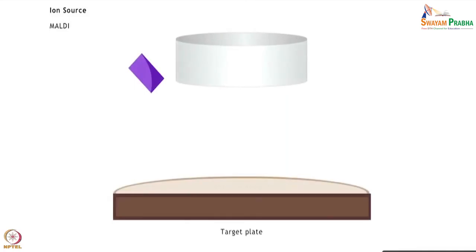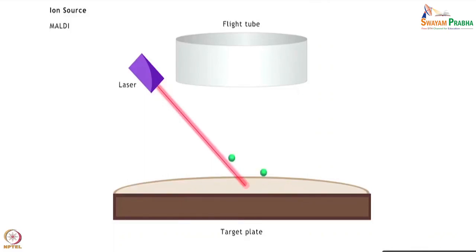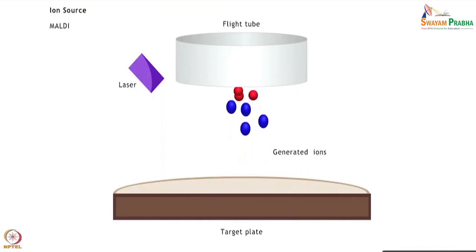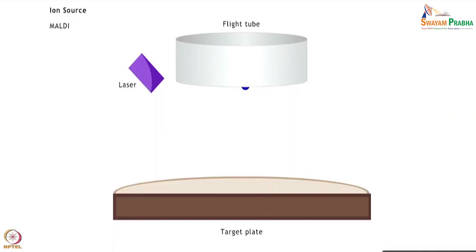The ionization source is responsible for converting analyte molecules into gas-phase ions in vacuum. This has been made possible by the development of soft ionization techniques like matrix-assisted laser desorption ionization and electrospray ionization, which ensure that the non-volatile protein sample is ionized without completely fragmenting it. In MALDI, the analyte of interest is mixed with an aromatic matrix and bombarded with short pulses of laser. The laser energy is transferred to the analyte molecules, which undergo rapid sublimation into gas-phase ions.